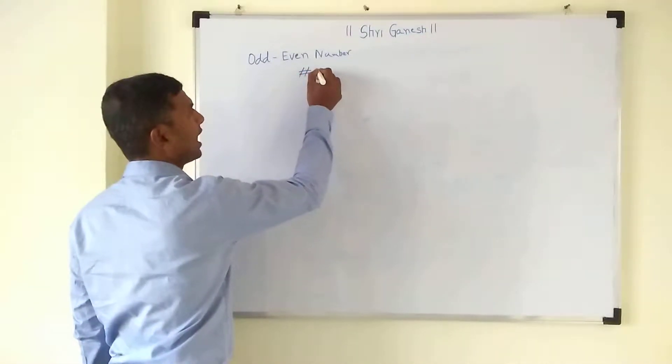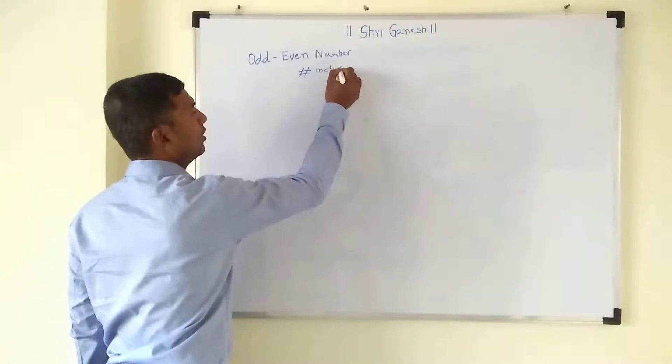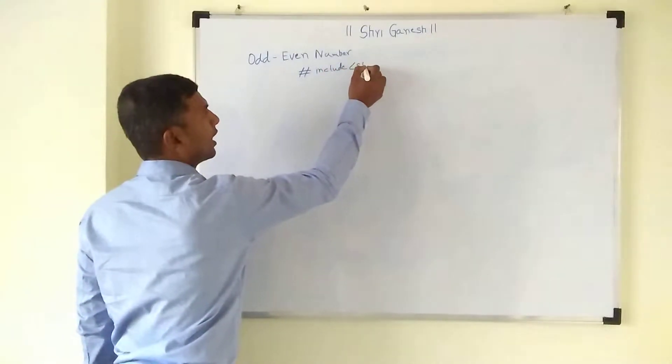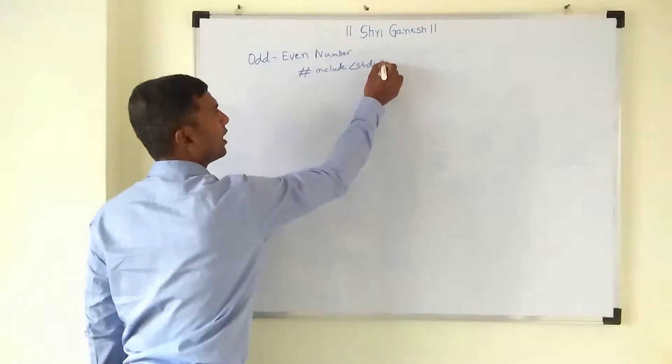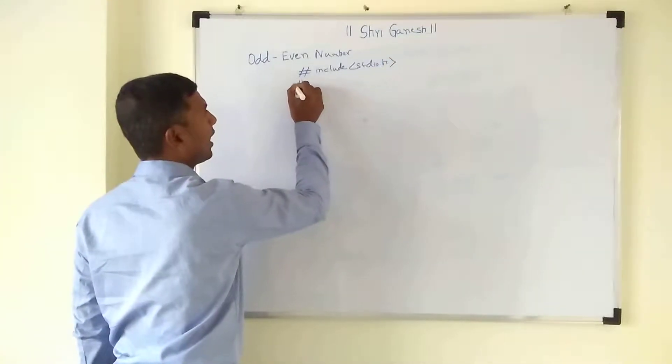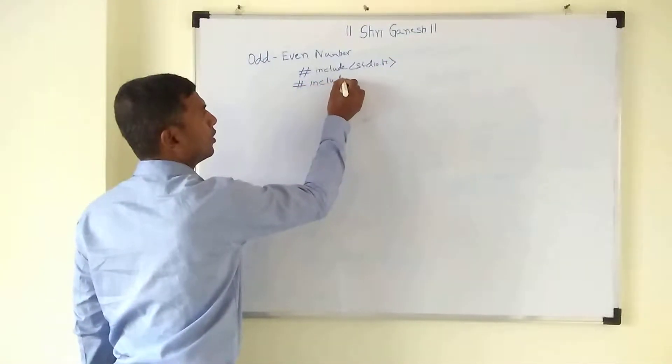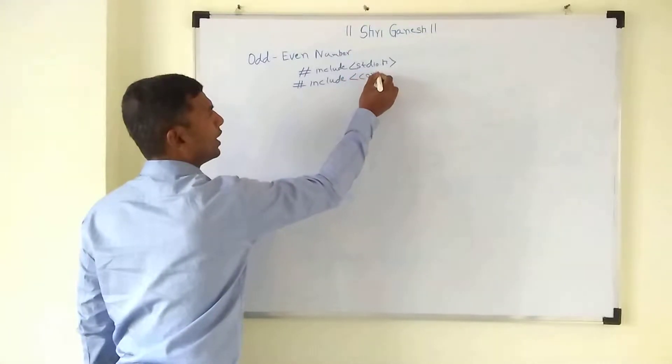So first we will write down the header files: hash include stdio.h, the standard input output header file, then hash include conio.h.